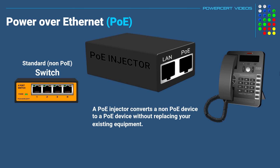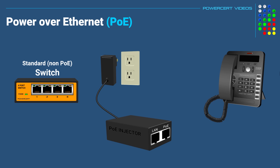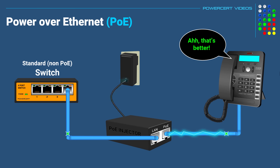A PoE injector converts a non-PoE device to a PoE device without replacing your existing equipment. A PoE injector has two ports: a LAN port and a PoE port. The LAN port would be connected to one of the switch's ports with an ethernet cable, and the PoE port would be connected to the IP phone using another ethernet cable. Then the injector would be plugged into an electrical outlet. So now the injector is getting data from the switch and power from the electrical outlet, and it's transmitting them both over the ethernet cable to the IP phone.